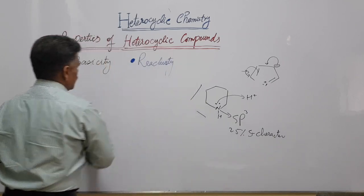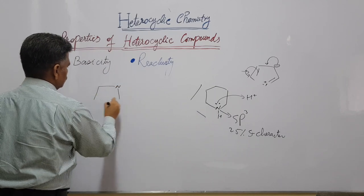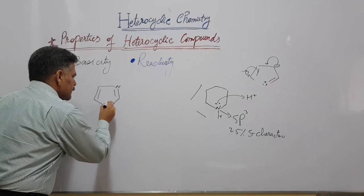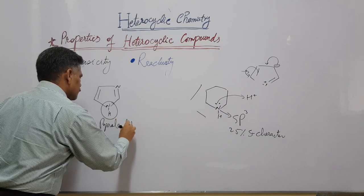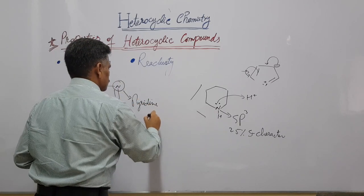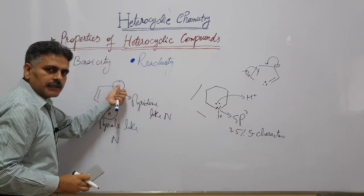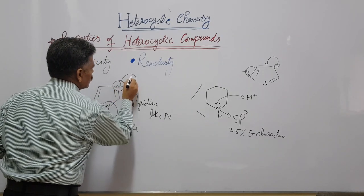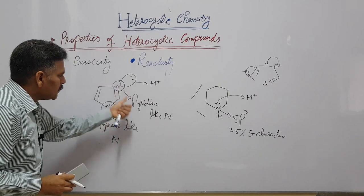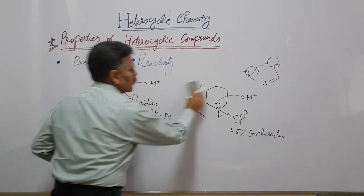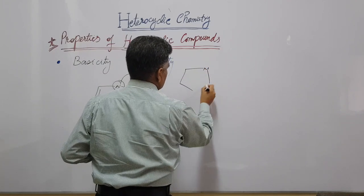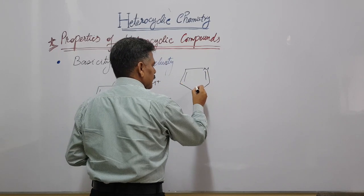Extending this concept to imidazole: imidazole is also basic in nature. One nitrogen in imidazole is pyrrole-type and the other nitrogen is pyridine-type. The lone pair of the pyridine-like nitrogen is not involved in resonance and can be donated to acids. Because of the presence of this pyridine-like nitrogen, imidazole is basic in nature.